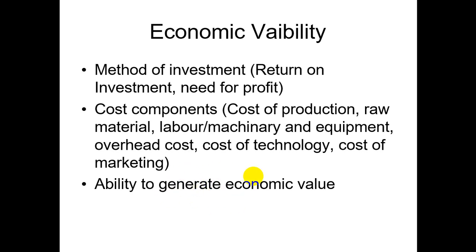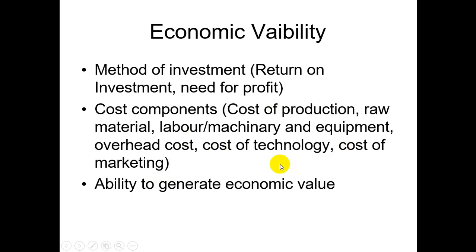Under economic viability, we consider the cost of production — variable and fixed costs, overall production cost, raw material costs, labor, machinery, equipment, and overhead costs. We also account for technology costs, and then the cost of marketing.